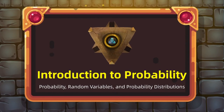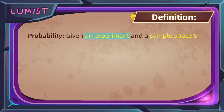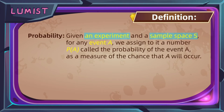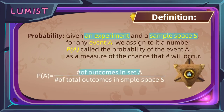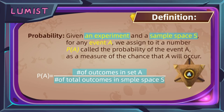Today we're going to use these concepts to talk about what exactly probability is. Simply put, probability is how likely something is to happen. Formally, given an experiment and a sample space S — where an experiment is a process by which we observe something uncertain, and the sample space is all the possible outcomes — for any event A, we assign to it a number P(A), called the probability of event A, as a measure of the chance that A will occur. It is defined as the number of outcomes satisfying event A divided by the total number of outcomes in the sample space.